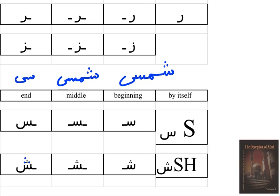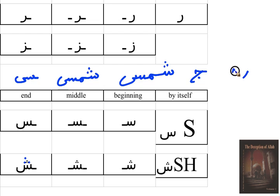Remember the rule: all letters at the end of a word come back to their original shape — even if there is a connection or a little tail, they go back to original shape. For example, if the letter at the end is 'ja,' it will look like 'ja' with just a small tail to connect with the letter before it. If the letter before it is 'ra,' which does not accept connection, then 'ja' will come without that tail.